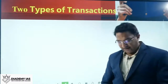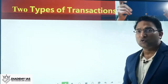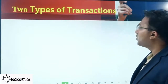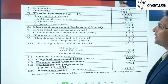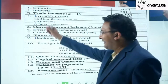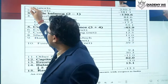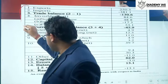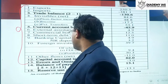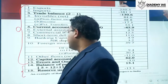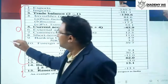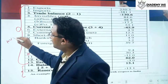Moving to the next concept — two different types of transactions in the BOP statement. In the BOP statement, total transactions can be categorized into two major categories: one category above the balance of payment, and one category below the balance of payment.